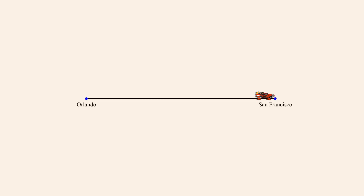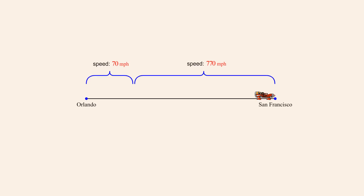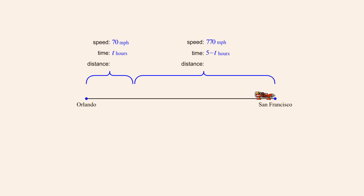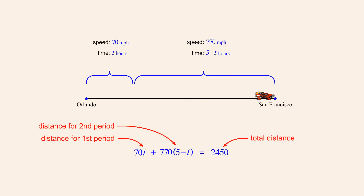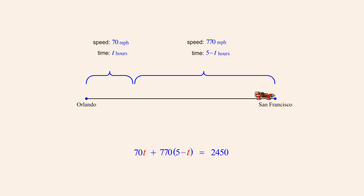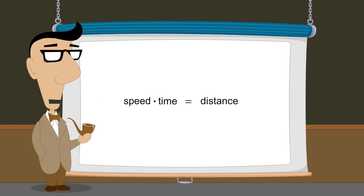The third example involved a single vehicle traveling at two constant speeds during two different time periods. The speeds were known, but the length of time for each period was not. However, we knew the two times were related since their sum was five hours, so we could use a single variable to create expressions for both times. We then wrote expressions for the distances traveled during each period as speed times time, equated the sum of these distances to the total distance, solved for the variable, and evaluated both time expressions. In the next lecture, we will see how to use linear equations to solve problems which involve percentages.